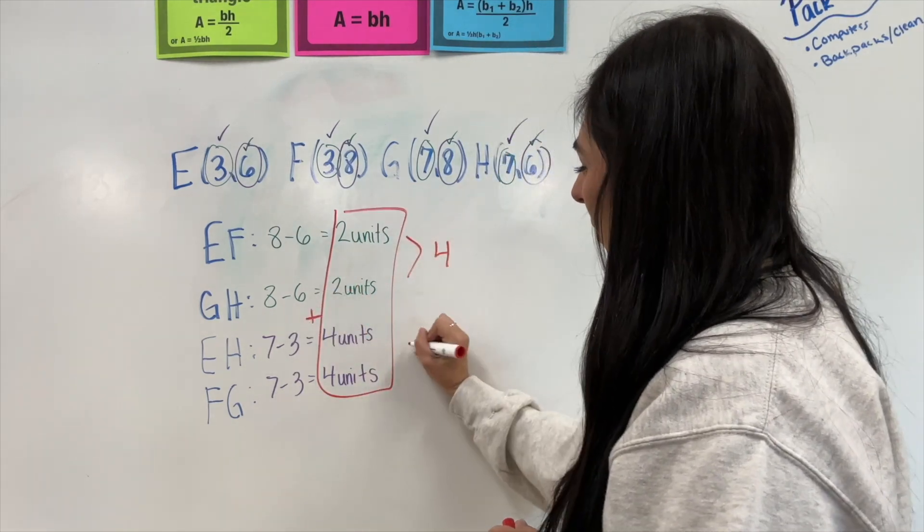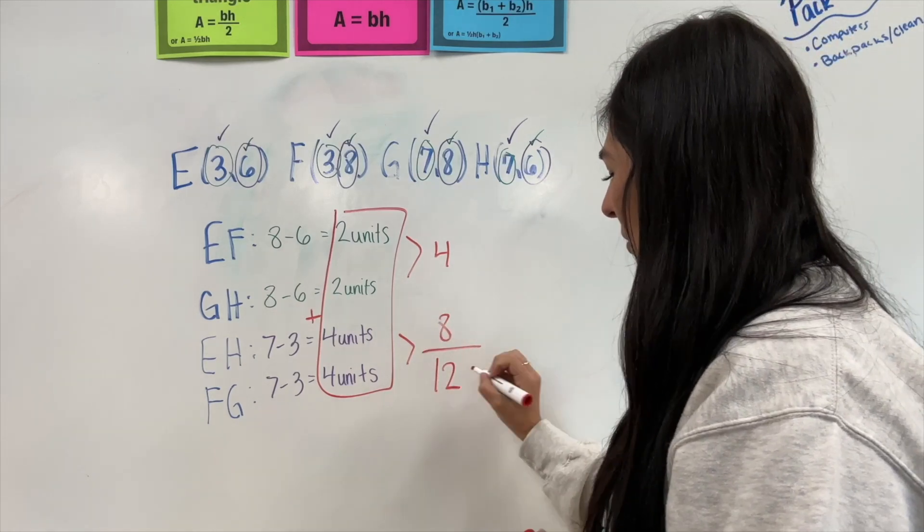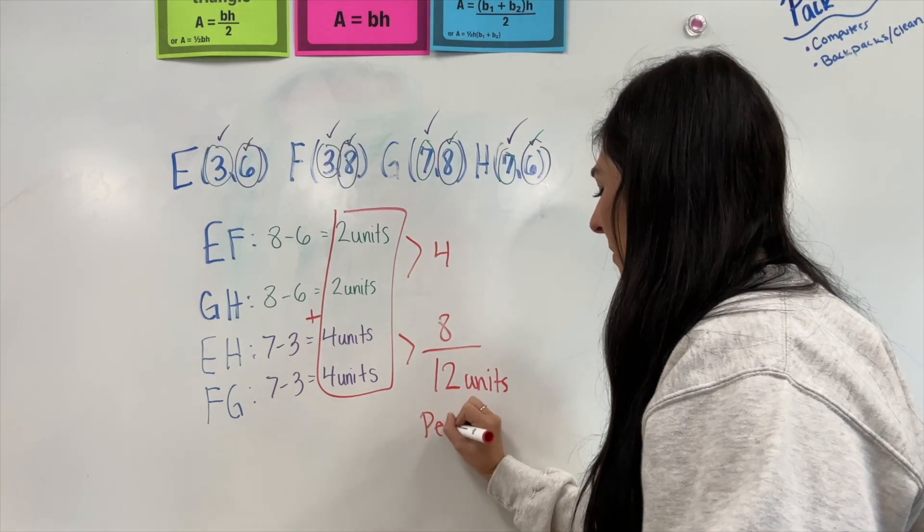Okay, those would be four. These would be eight. Eight, nine, 11. Again, I have 12 units and that's my perimeter.